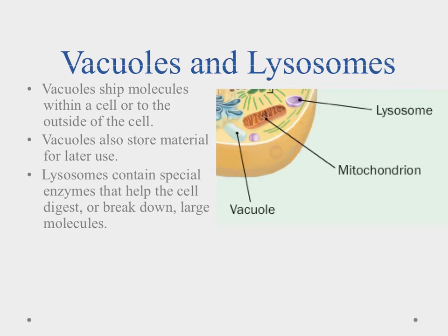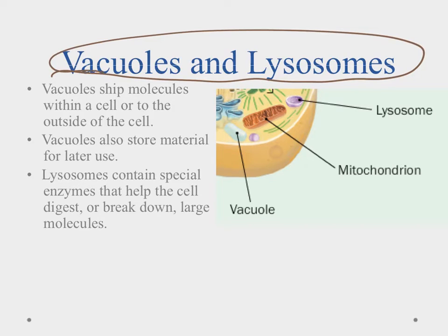The last organelles we're going to talk about in this video are the vacuoles and lysosomes, and these are for storage for the most part. Vacuoles are definitely storage containers — they can ship things around, move them in the cell or outside of the cell, but they're also good for storing stuff for later use. Plants generally have one major vacuole, generally filled with water and some nutrients. For animal cells, we generally have a bunch of smaller vacuoles throughout the cell.